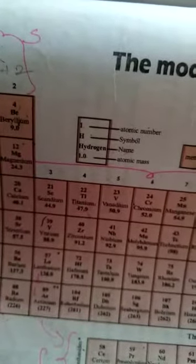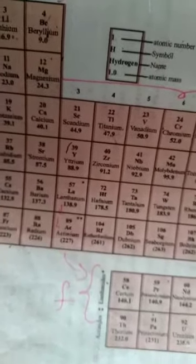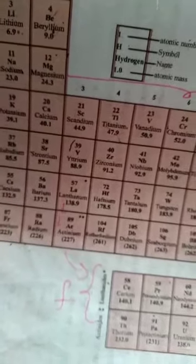So, we saw so much history, how the elements are arranged. What is the difference between Moseley and so many are there? Aristotle, Lavoisier, Dobereiner, Newlands, Mendeleev, all these people arranged elements according to the atomic weight. But, only Moseley arranged according to the atomic number, which is very, very important.